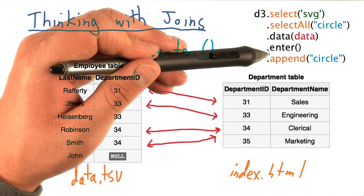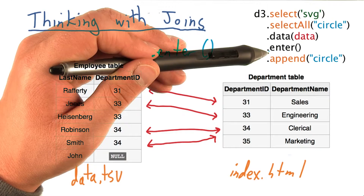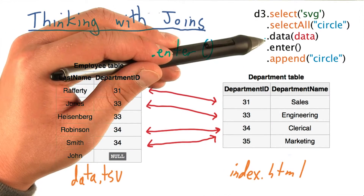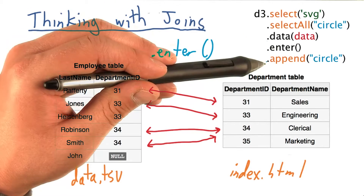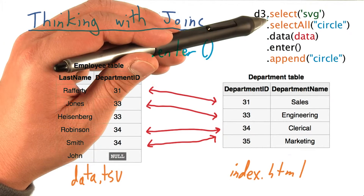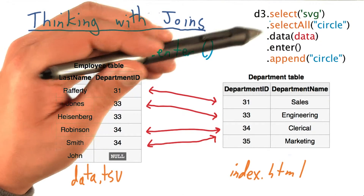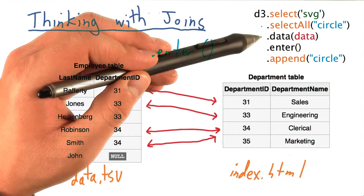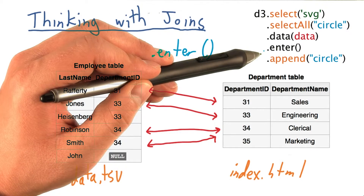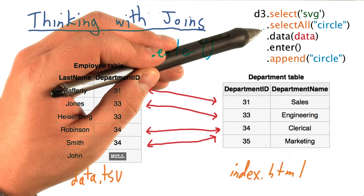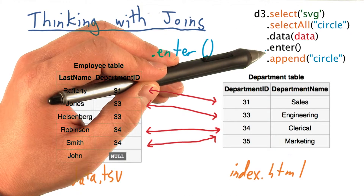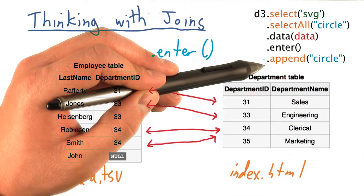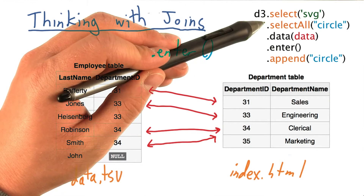The `.enter()` selection corresponds to all of these elements in this new mirror table that the data bind creates, which then get appended to whatever we first selected — in this case, the SVG element. So on the first time through, there are no circles on the page. We bind data, select all the bound data as placeholder circles that are not yet on our page, and since there won't be any, for every one of those we append a circle to our SVG element.